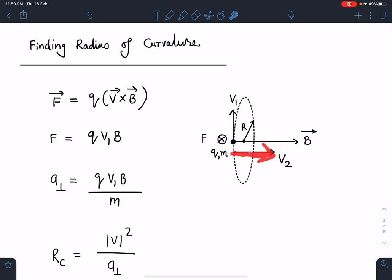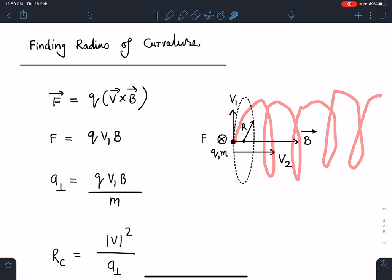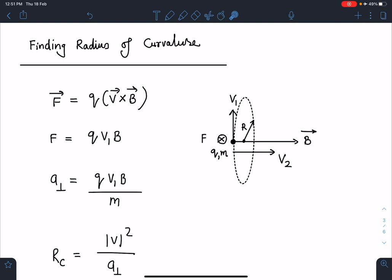When we combine these two, it generates a helix. This kind of motion will come. Since v₂ and B are parallel, this component cannot generate any force.